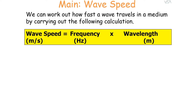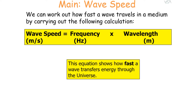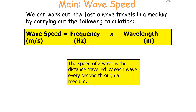We can carry out a calculation to work out how fast the wave travels in the medium. Wave speed in meters per second is equal to frequency in hertz times by wavelength in meters. This equation shows how fast a wave transfers energy through the universe. The speed of a wave is the distance travelled by each wave every second through a medium.